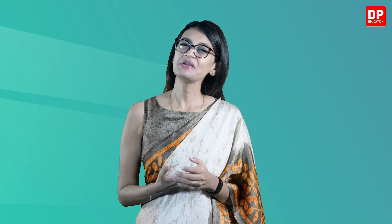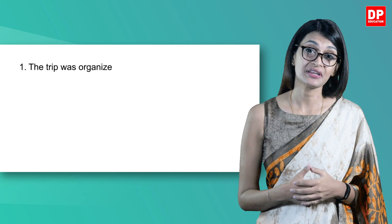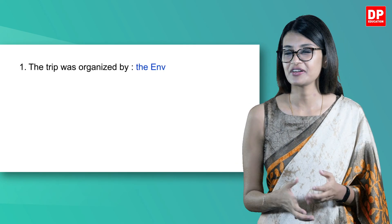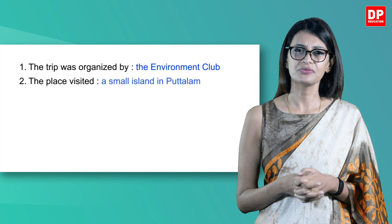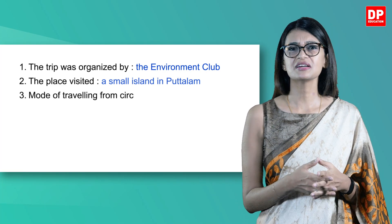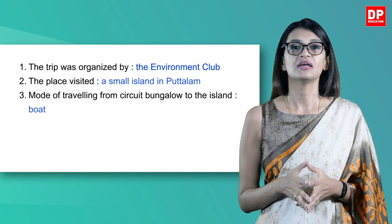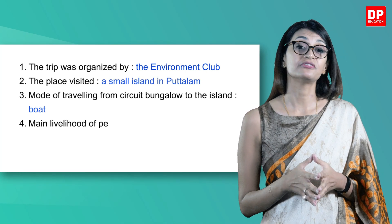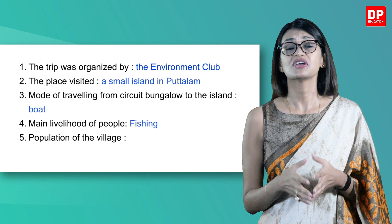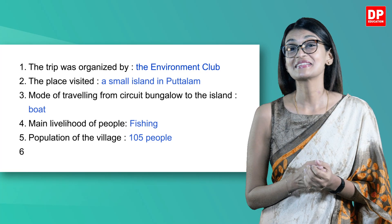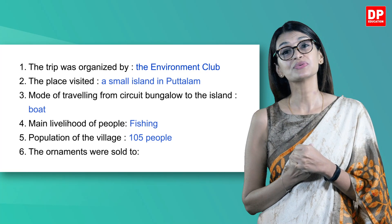Now let's look at the questions and write down the answers by scanning the text for relevant answers. Question 1: The trip was organized by the environment club. Number 2 — the place visited: the small island in Puttalam. Number 3 — mode of traveling from the circuit bungalow to the island: boat. Question 4 — main livelihood of people: fishing. Question 5 — population of the village: 105 people. Number 6 — the ornaments were sold to tourists.